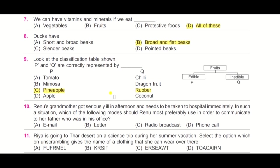Question number ten: Renu's grandmother got seriously ill in afternoon and needs to be taken to hospital immediately. In such a situation, which of the following modes should Renu most preferably use in order to communicate to her father who was in his office? Look at the options: A, email; B, letter; C, radio broadcast; and D, phone call. Read the question very carefully, children, it is very easy.